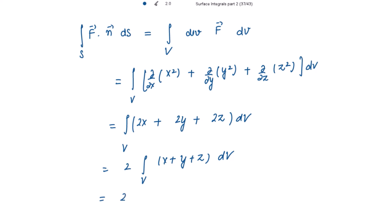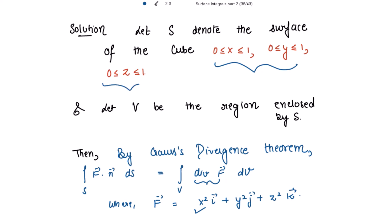So the volume integral is equal to twice the volume integral of (x + y + z) dx dy dz. The limits are x from 0 to 1, y from 0 to 1, and z from 0 to 1.